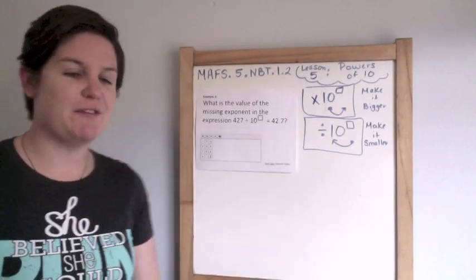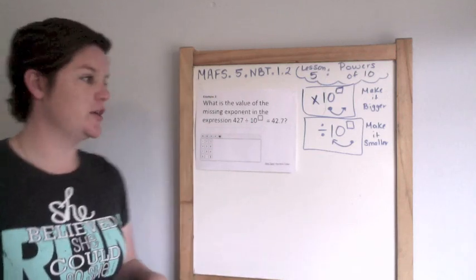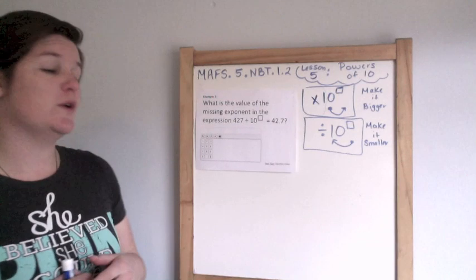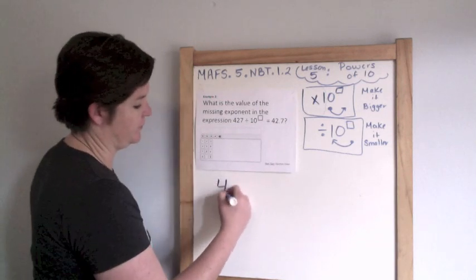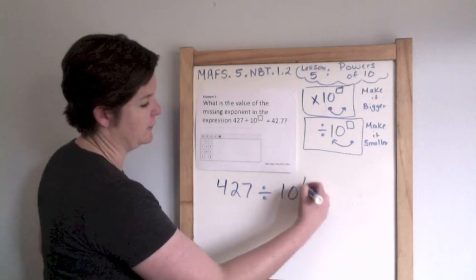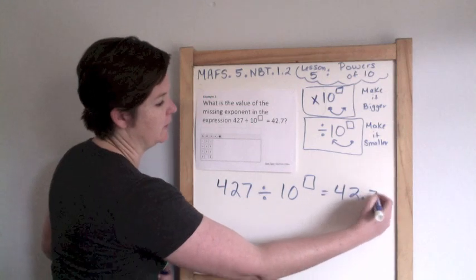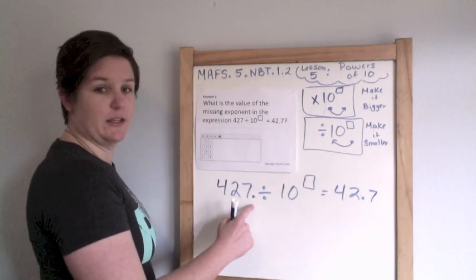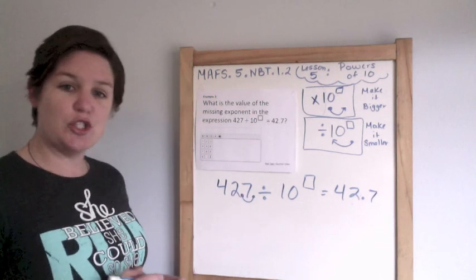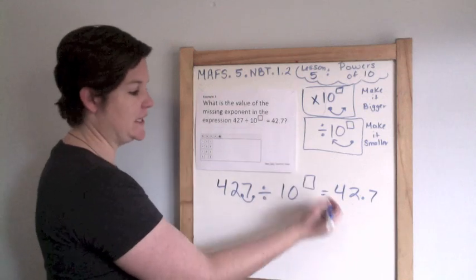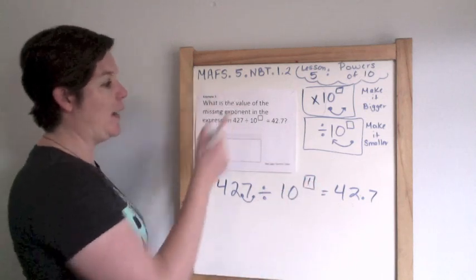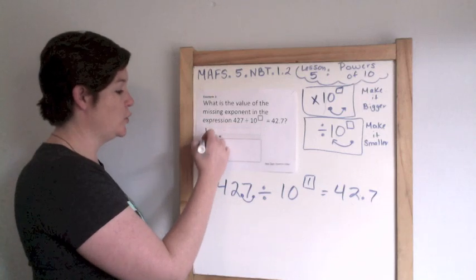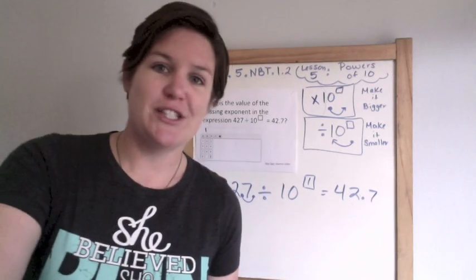Example two. What is the value of the missing exponent in the expression? 427 divided by 10 to what exponent equals 42 and 7 tenths. So here is another equation editor item. Let me make it a little bit bigger for y'all. Trying to figure out what goes inside our unknown box. Well we said when we are dividing by a power of 10, we are making it smaller. So if our decimal point was here, and now we're making it smaller, and now it's here, how many jumps did we do? We did one jump to the left. So it would be divided by 10 to the power of 1. However, we're not going to put 10 to the power of 1. It says what is the value of the missing exponent. The value is 1. You press 1.